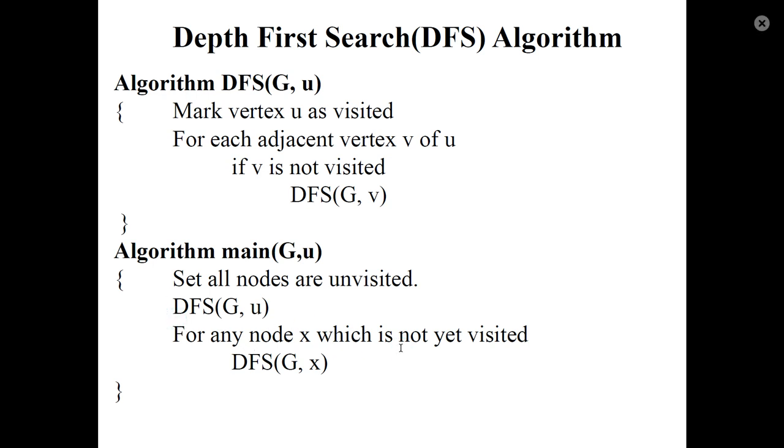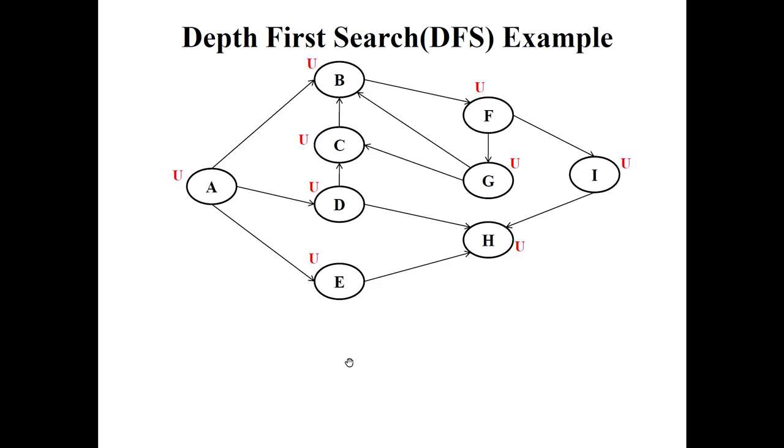This is an example. Initially, all nodes are unvisited. Then, suppose A is the starting node. The traversal starts. First, A is visited.